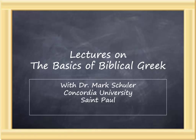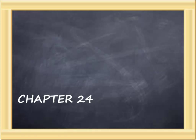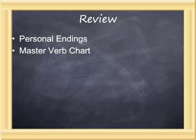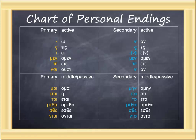The Basics of Biblical Greek, Chapter 24. We are in the midst of working on the indicative forms of the Greek verb in the omega conjugation. Let's review where we are to date. There are two sets of personal endings, primary and secondary. Within the twelve endings for each class, there are six which are active and six which are middle passive.